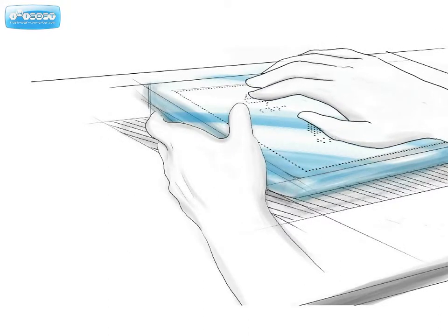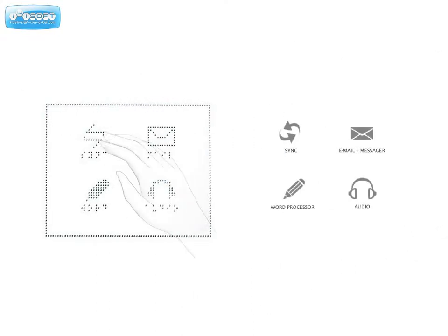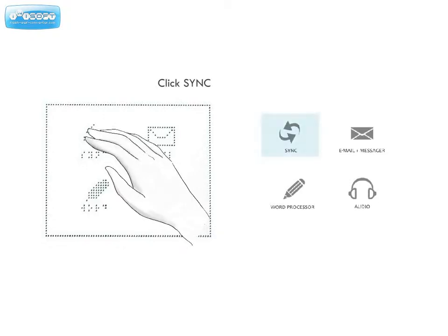This user interface displays simplified icons using the dots like monitor pixels and outputs text as braille. Users can select icons by pressing down on them firmly with their hand.